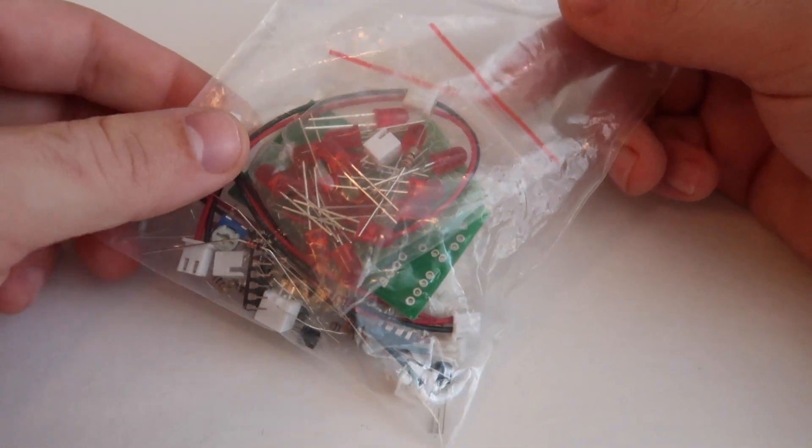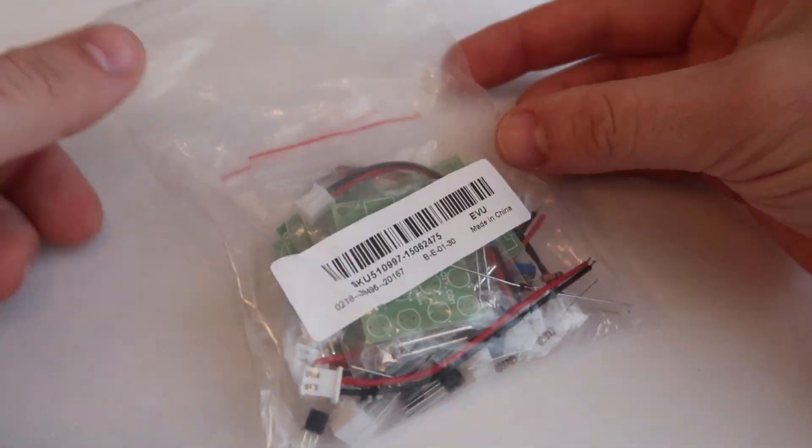This is the do-it-yourself strobe light kit. It cost just under $4. Let's take a look at the pieces.